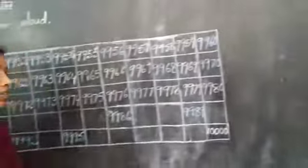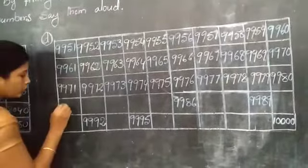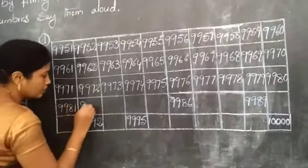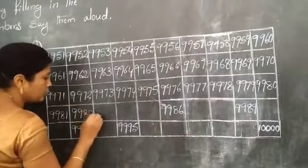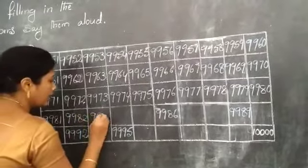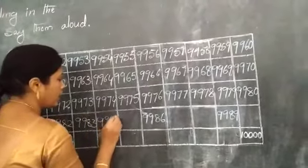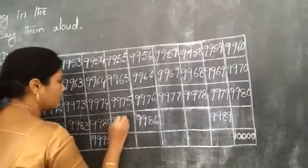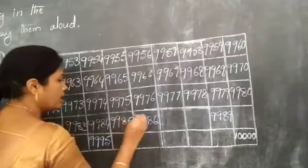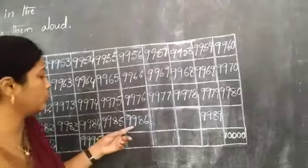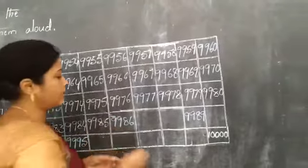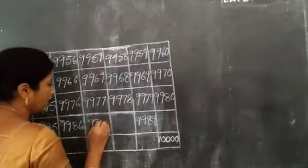9980. Next, 9981, 9982, 9983, and 9984, 9985. Next, 9986.